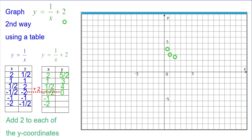Now going the other direction, negative 2 plus 2 is 0, so negative 1 half comma 0. Negative 1 plus 2 is positive 1, so negative 1 comma 1. And negative 1 half plus 2, think of 2 as 4 halves, negative 1 half plus 4 halves is 3 halves, so negative 2 up 1 and a half.